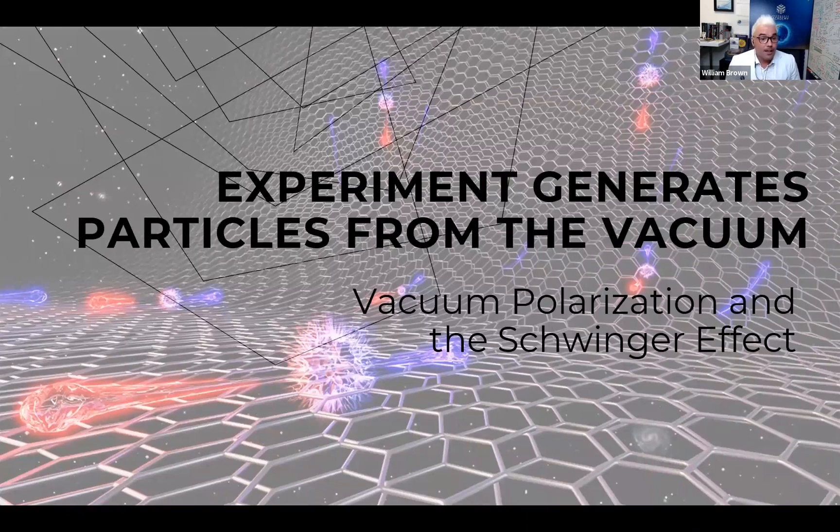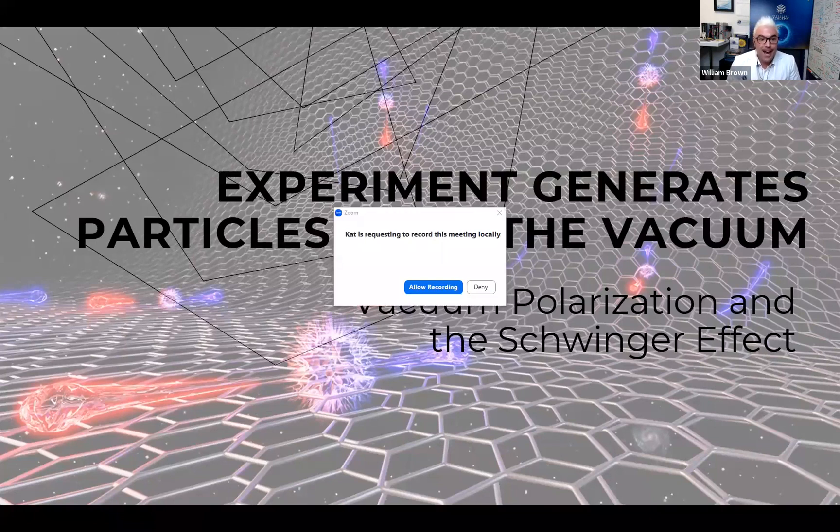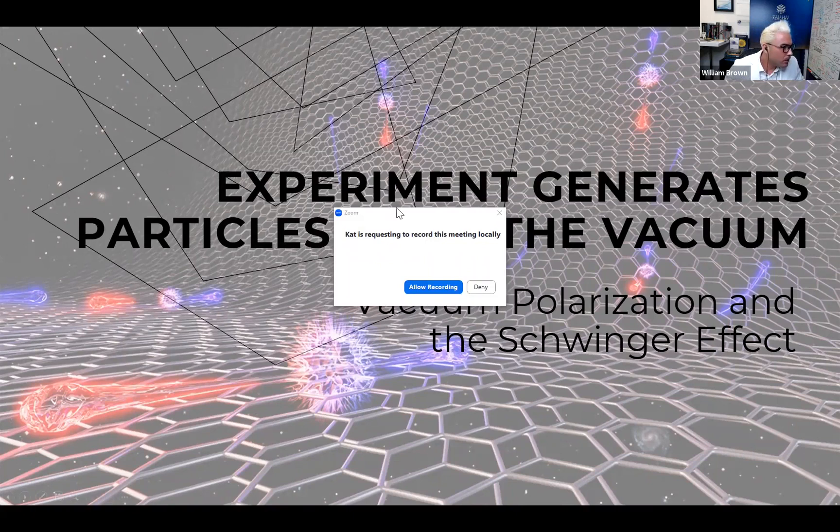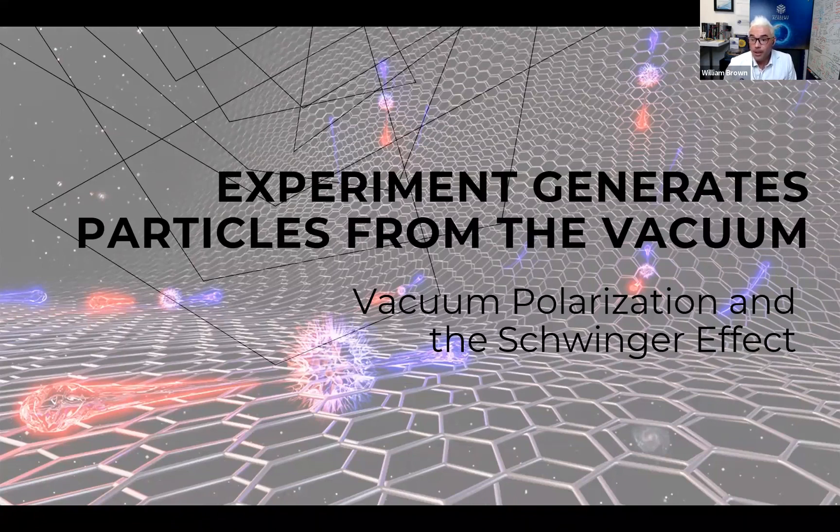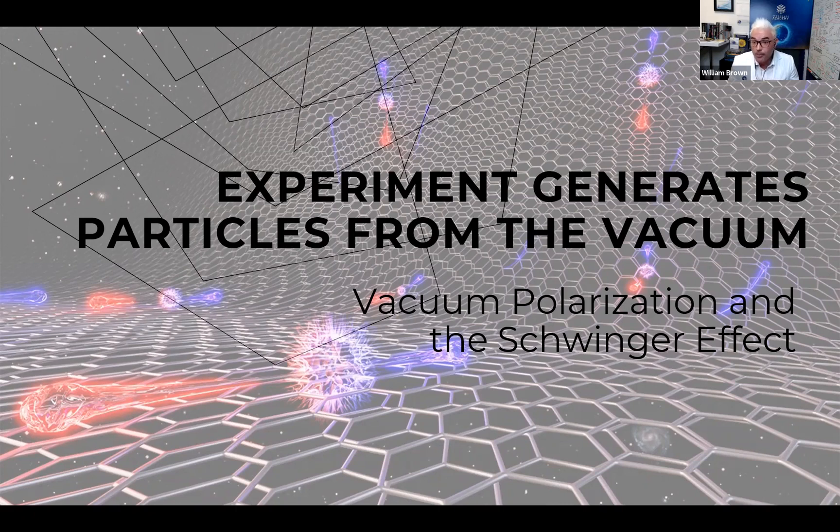An experiment recently performed has produced particles from the quantum vacuum. The first experiment that we will review has to do with a process referred to as vacuum polarization, described via the Schwinger effect. This is a vitally important process to understand for the theoretical basis and applied engineering of technologies that can harness the energy of the quantum vacuum. Because one of the key processes in tapping the zero-point energy density is generating a gradient, i.e. polarization in the vacuum energy fluctuations.